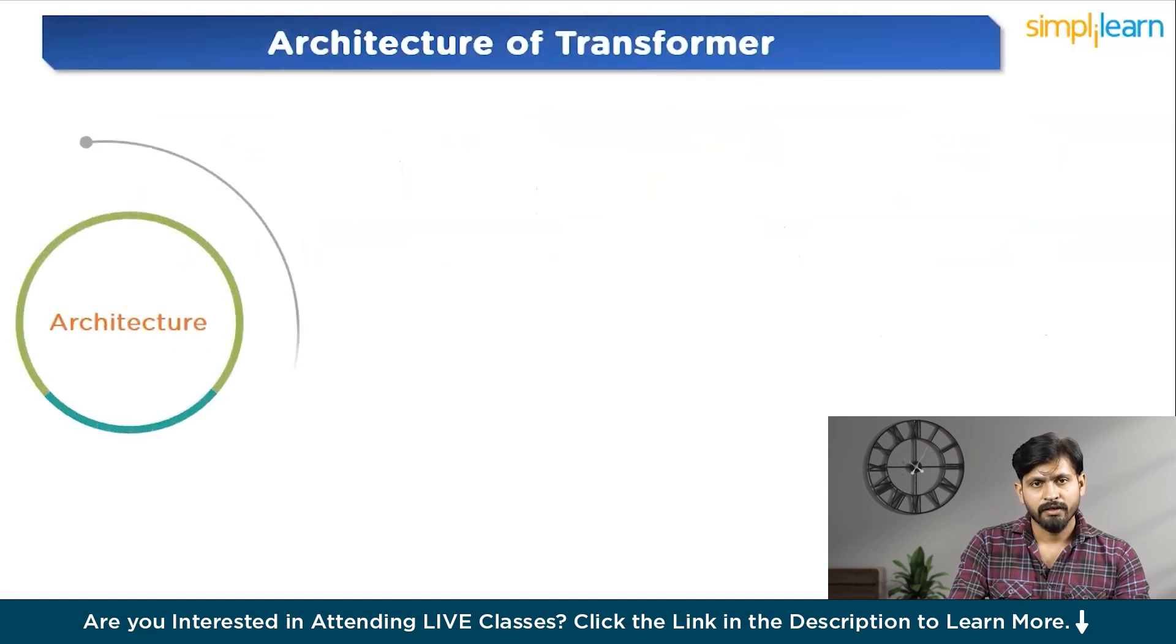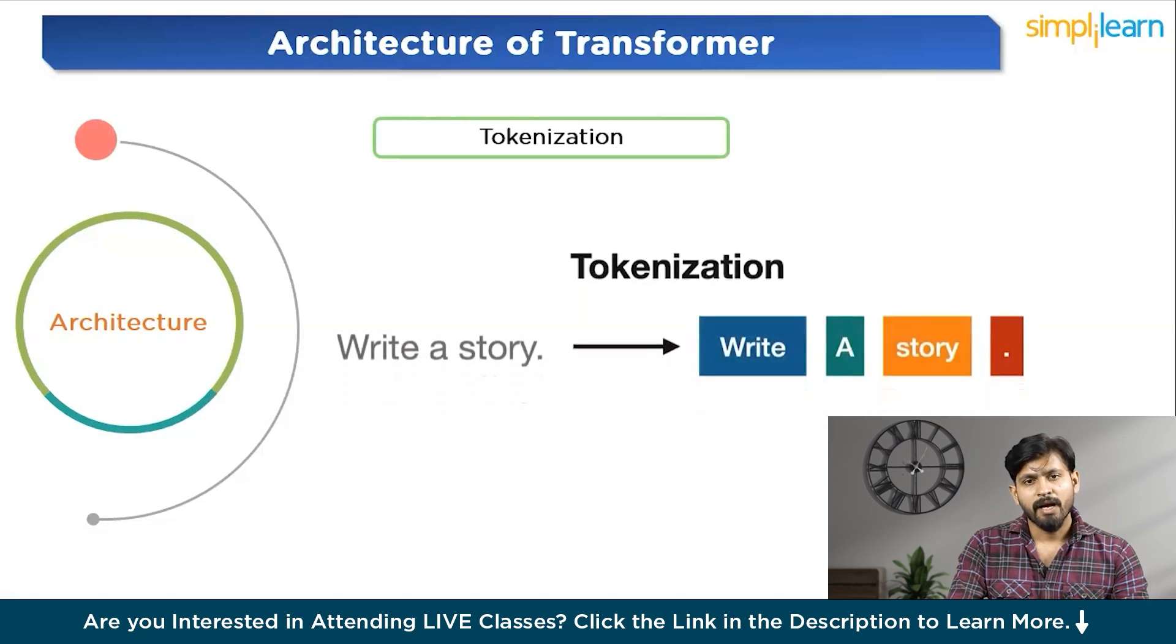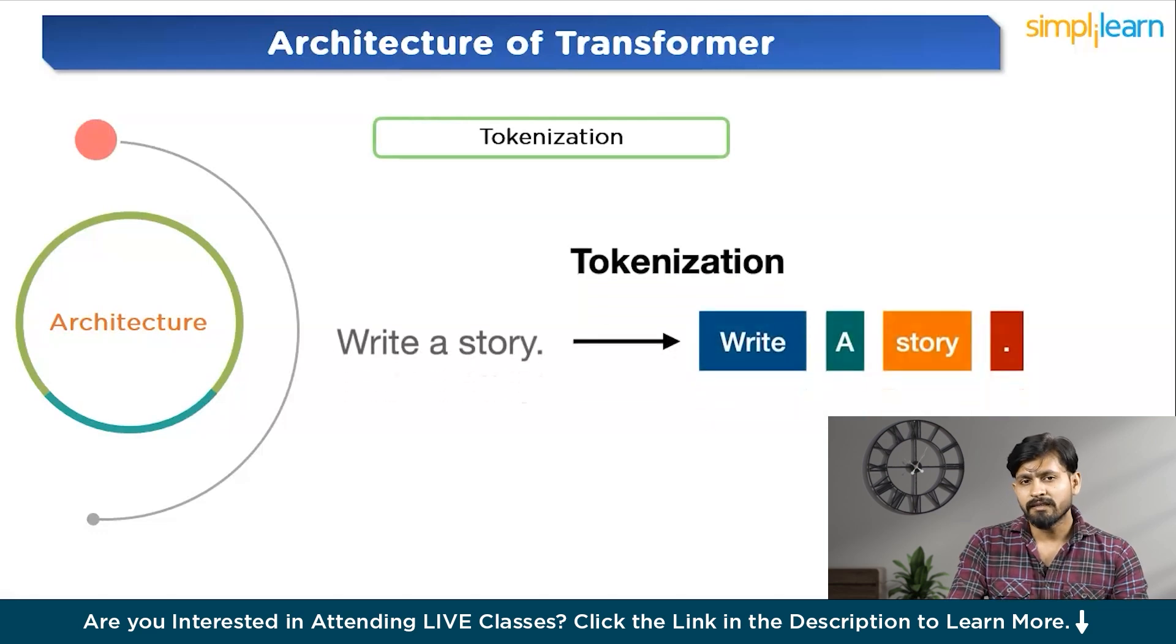Let's start with tokenization. Tokenization is indeed a fundamental step in natural language processing. It involves breaking down a piece of text, such as a sentence or document, into smaller units called tokens. These tokens can be individual words, subwords, or even characters, depending upon the specific tokenization strategy used.